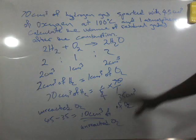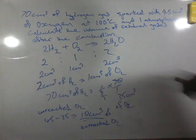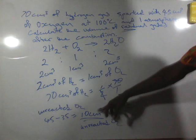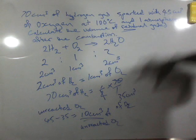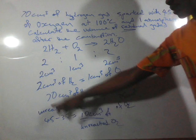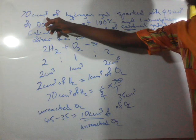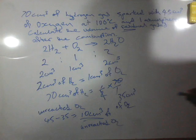So now this 10 cm³ happens to be part of our residual gases, because after the reaction this 10 cm³ will remain. In this case, 35 cm³ from this will combine completely with 70 of hydrogen to give us another product.